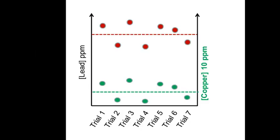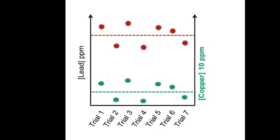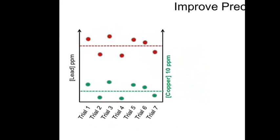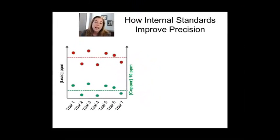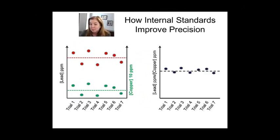So by running an internal standard at the same time you do your primary measurement, you're going to be able to sort of get the fluctuations mirrored in the internal standard data set. And if you divide the lead by the copper, something pretty magical happens.